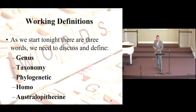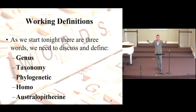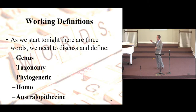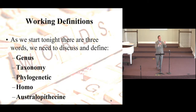The first definition is genus — a biological term referring to a family of organisms, a large subdivision. Like Homo sapiens, who are in the genus Homo. The next word is taxonomy — a scientific term that defines biological organisms. We set up a taxon, we say they're biologically similar, and we put them in the same taxonomy.